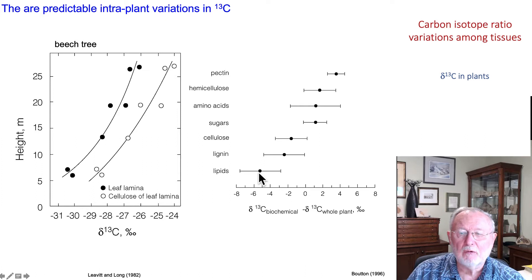Whereas pectins and hemicellulose or cellulose are enriched relative to the whole leaf. This is very predictable based on knowing the biochemistry, which you might learn from the Merck chart. But we won't have time to go into that today.